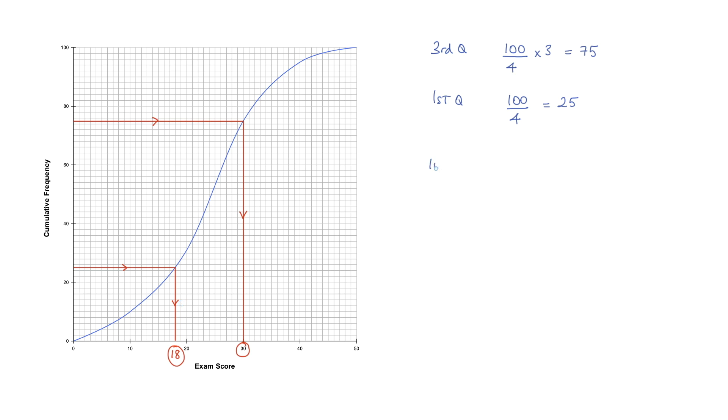So the interquartile range is equal to the third quartile value which is 30, subtract the first quartile value which is 18, and that gives us a value of 12.